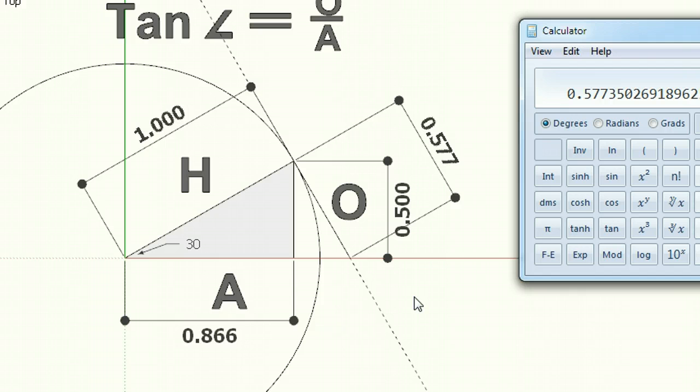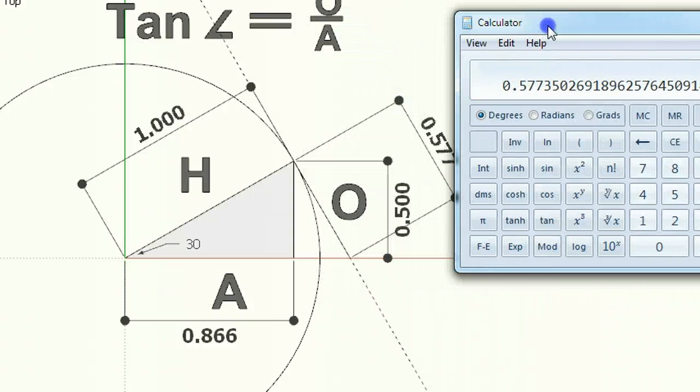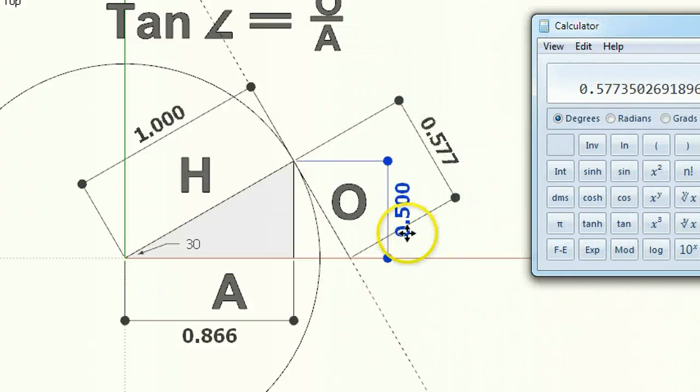So you say to yourself, well, what is that? What is this 0.577? So I'm going to take a look at that as well. If I put in this—it's quite amazing, this actually—this value is the relationship of this value to this value.